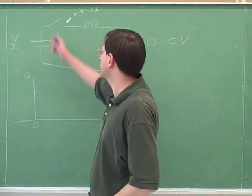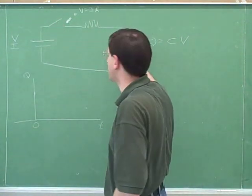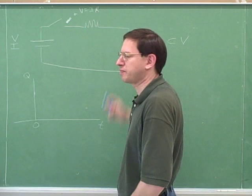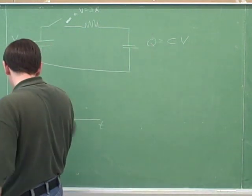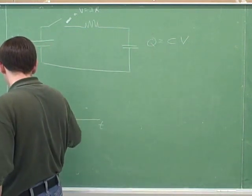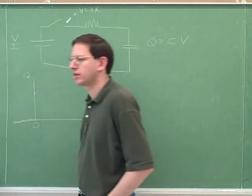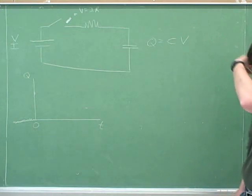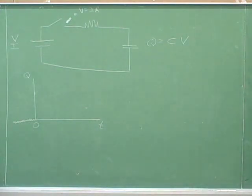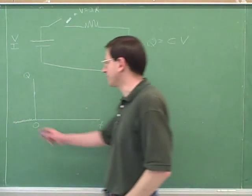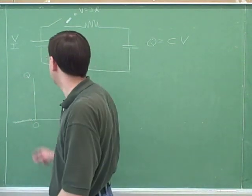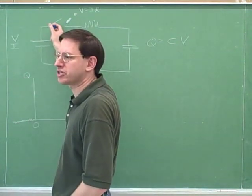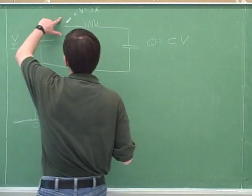Let's say that we start with this circuit open and no charge here. No charge on the capacitor. That would put us here on the graph. The charge is down at zero. Now, at time zero, we're going to close the switch. At time zero, we're going to close the switch.